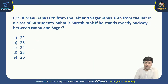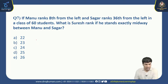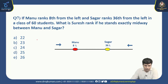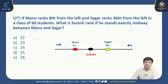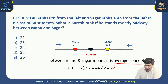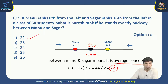Next: Manu ranks 8th from the left and Sagar ranks 36th from the left in a class of 60 students. What is Suresh's rank if he stands exactly midway between Manu and Sagar? Both are counted from the left end. To find Suresh's position, we use the average concept: averaging 8 and 36 gives 22. So the position of Suresh is 22nd from the left end. Right answer is option A.